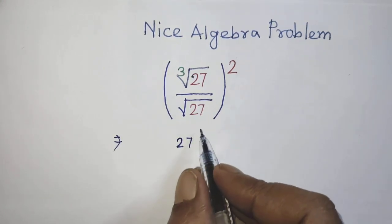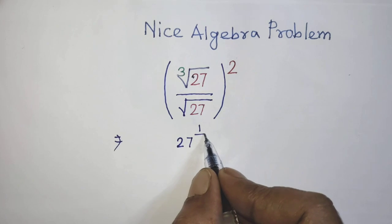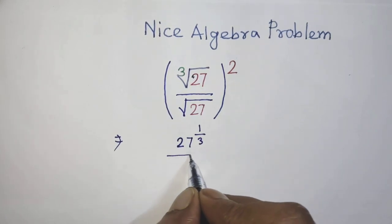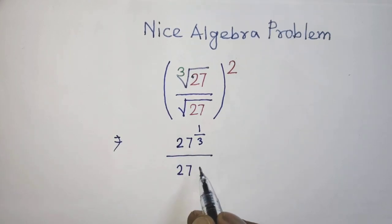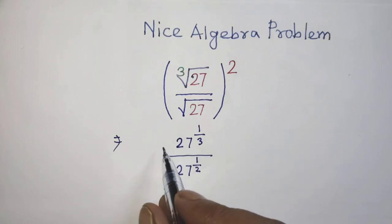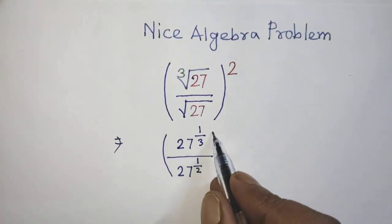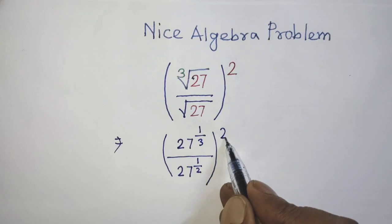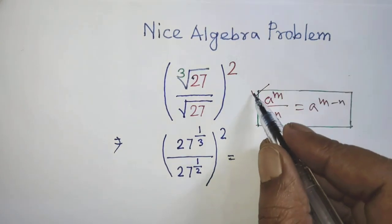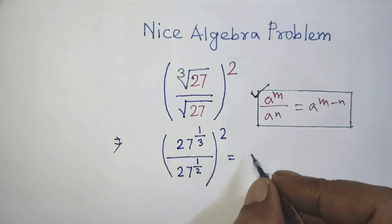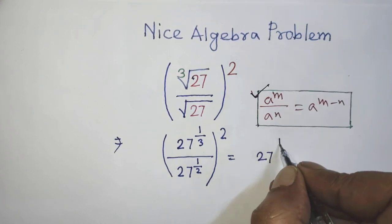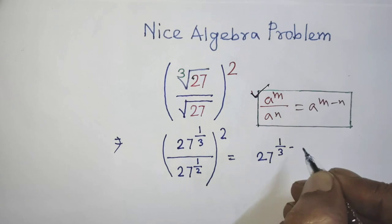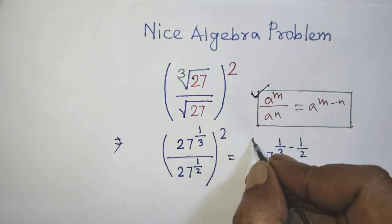In the first step of the solution, it will be 27 to the power 1 over 3, over 27 to the power 1 over 2, all to the power 2. According to this formula, it will be 27 to the power 1 over 3 minus 1 over 2, whole to the power 2.